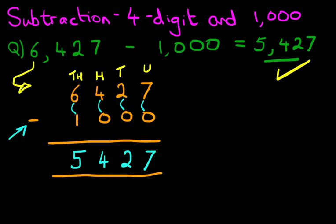That was relatively easy. And that is how we do subtraction of four-digit numbers and the number 1,000 using the vertical format.